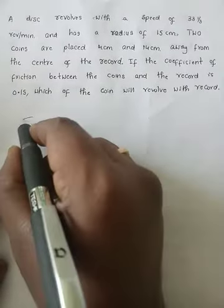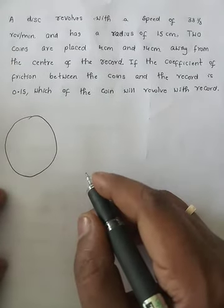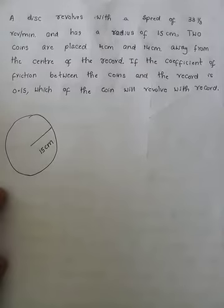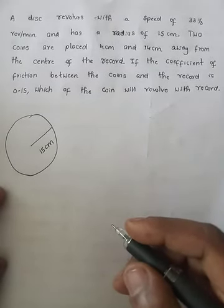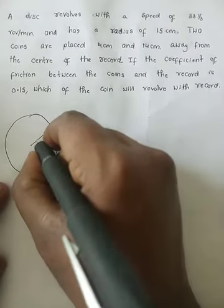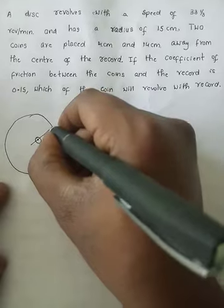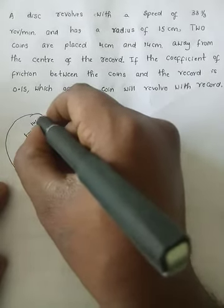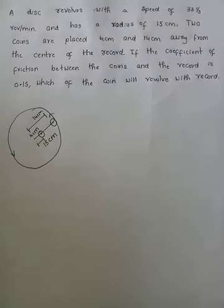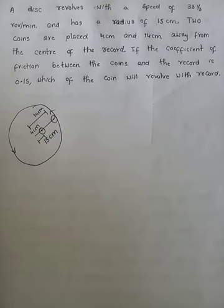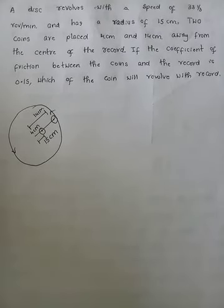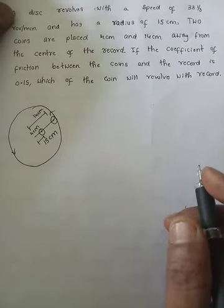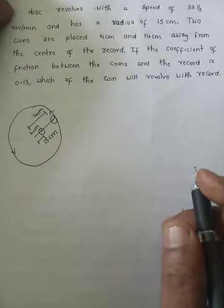There is a disc revolving with some revolution, having radius 15 centimeters. We place two coins: one coin at 4 centimeters from the centre, and another coin at 14 centimeters from the centre. The disc is making rotations. The condition is: the coin can revolve with the record when the force of friction is enough to provide the centripetal force.